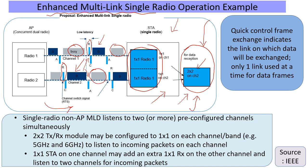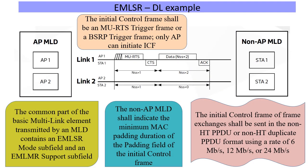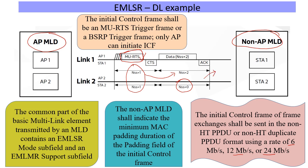Another helpful view: assuming that the APMLD is transmitting to the station, also called the non-APMLD. The non-APMLD is ready on both links as a one spatial stream receiver, capable of receiving frames like an RTS variant and processing only certain rates. As soon as this comes up on, say, link one, it switches to a two spatial stream receiver on link one, basically dropping any listening on link two. And once this data transaction is over, it has to go back to listening on both links.